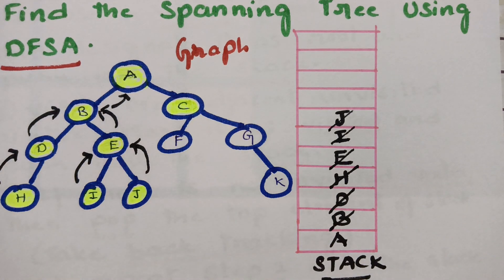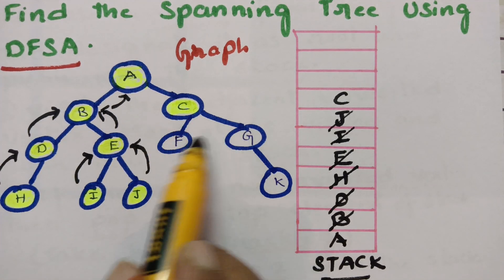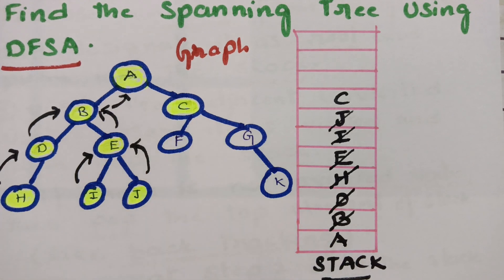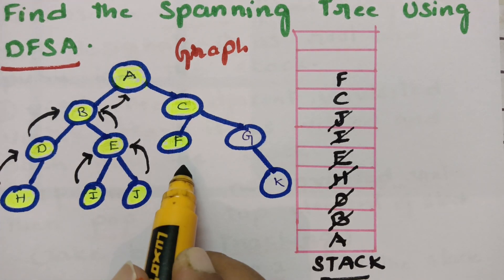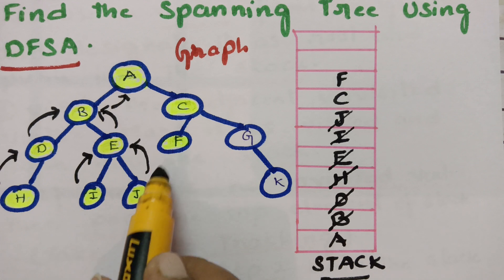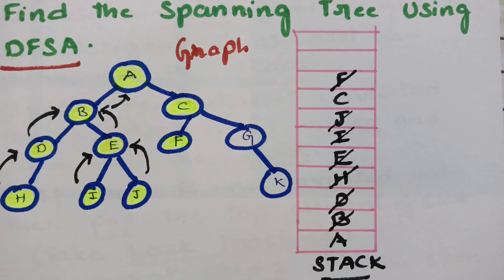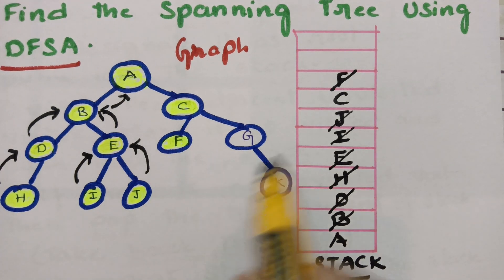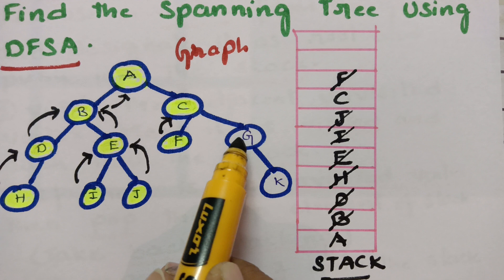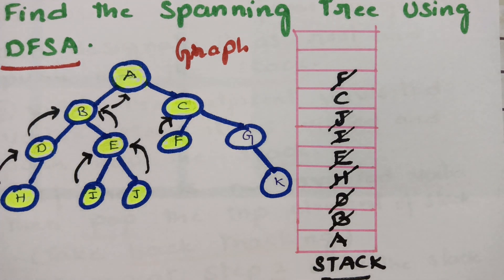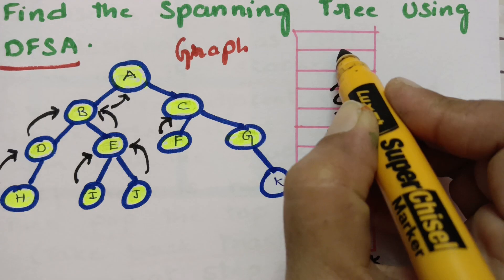I visit C, mark it as visited, and push it into the stack. From C there are two children — left child F and right child G — both are adjacent unvisited vertices. I visit the left child F, mark it as visited, and push it into the stack. After F there is no way to go anywhere deep into the graph, so pop F and take backtracking to C. C has two children F and G; F is visited, so now I go to visit the right child G, mark it as visited, and push it into the stack.